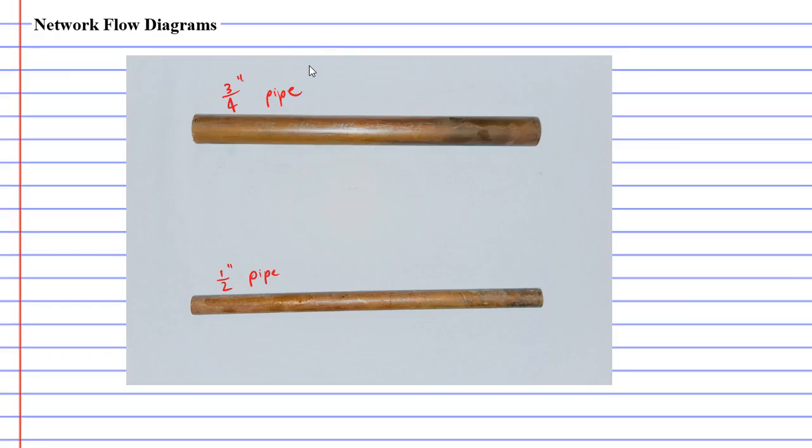Now these pipes have what is known as a maximum flow rate. I did a little bit of research and I found that the larger pipe, the three quarter inch pipe, had a maximum flow rate of 89 liters per minute. Meaning that the maximum amount of water that can pass through this pipe is 89 liters per minute. Emphasis on that word maximum. So you can have less water or less of a flow rate going through this pipe. You just can't go beyond 89.